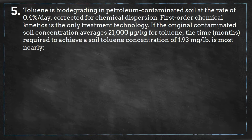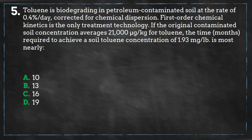the time required to achieve a soil toluene concentration of 1.93 milligrams per pound is most nearly: A. 10, B. 13, C. 16, or D. 19.